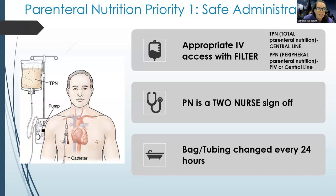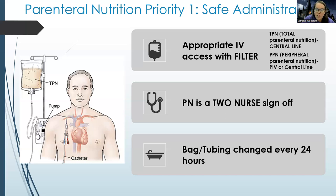Whether TPN or PPN, it requires a two-nurse sign-off where you read through all the nutrients in the bag to verify the right patient and right dose. You'll also need to use a filter because of the large particles — it helps separate particles and prevents them from overwhelming the bloodstream. Change the bag and tubing every 24 hours — most hospitals do this at 9 PM on night shift. Be prepared with proper supplies: your pump, filter, and appropriate access.